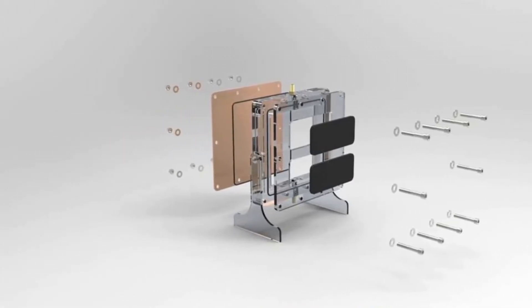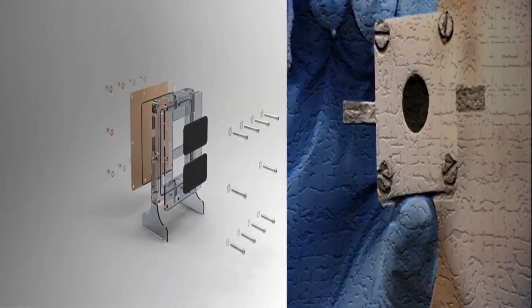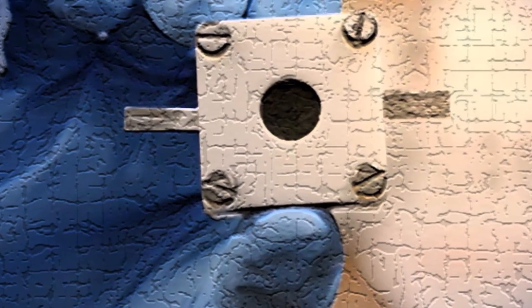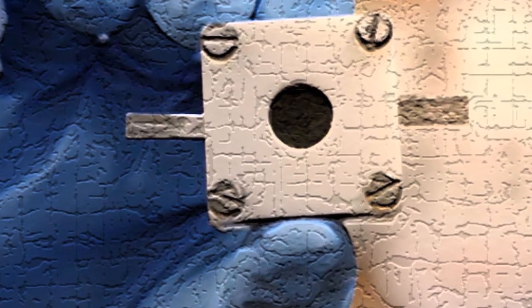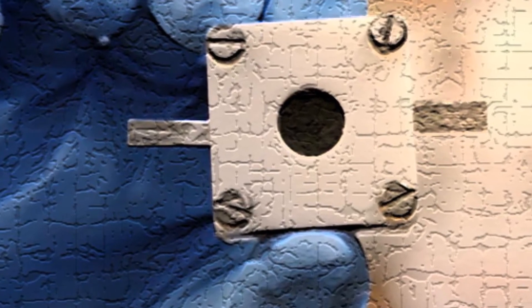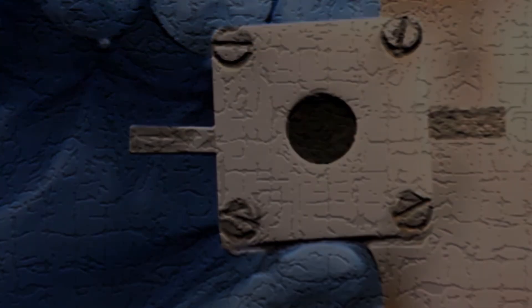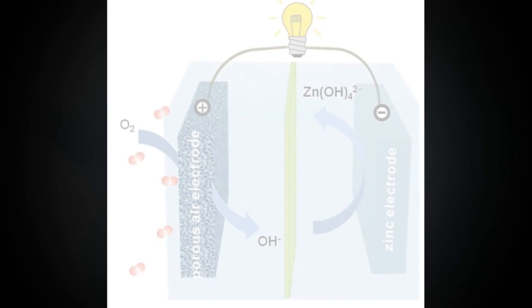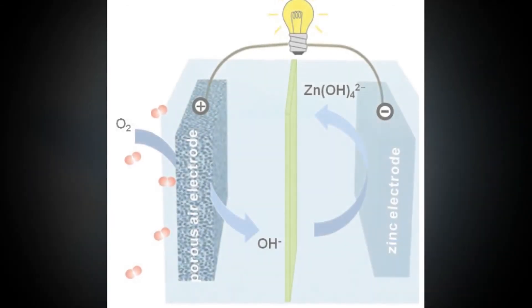These new catalysts are produced through the simultaneous control of the composition, size and crystallinity of metal oxides of earth-abundant elements such as iron, cobalt and nickel. They can then be applied to build rechargeable zinc air batteries.